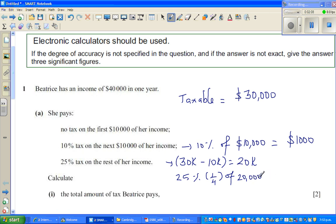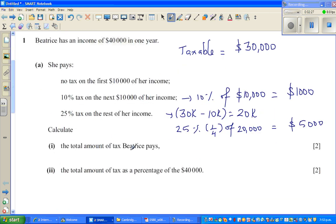What's half of $20,000? That's $10,000 and then again half, quarter is half of half, which is $5,000. So the first question is, the total amount of tax Beatrice pays would be $1,000 plus $5,000, which is $6,000.